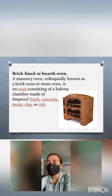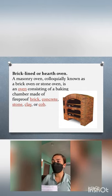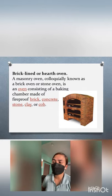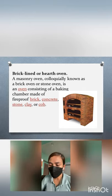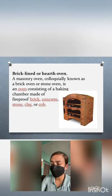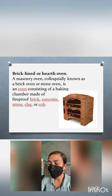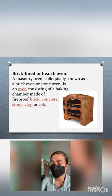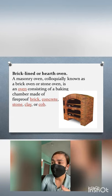Next, we have the brick-lined or hearth oven — a masonry oven, colloquially known as a brick oven or stone oven — consisting of a baking chamber made of fireproof brick, concrete, clay, stone, or cob. Modern masonry ovens are closely associated with artisan bread and pizza, but in the past they were used for any cooking tasks involving baking. We use this kind of oven for roasted vegetables, baked or grilled fish, and slow-cooked meats or flamed rib-eye steak.